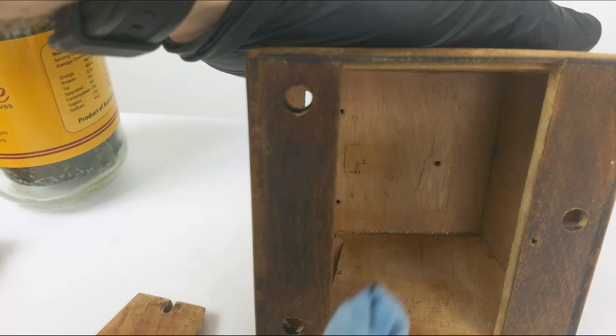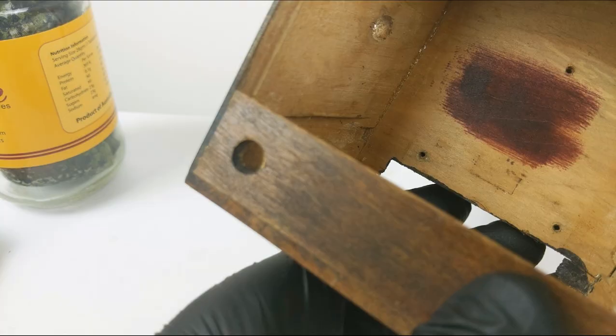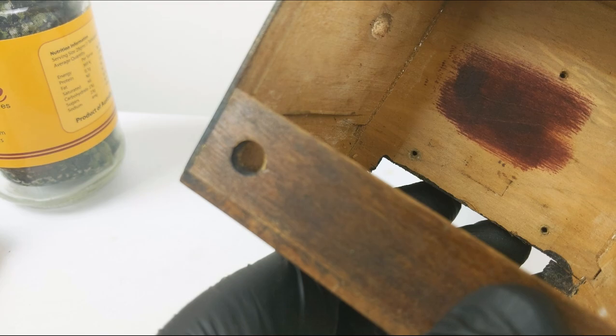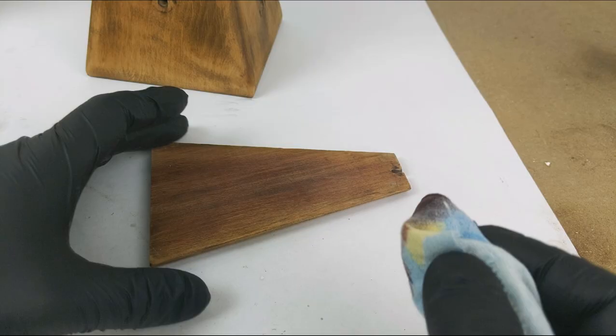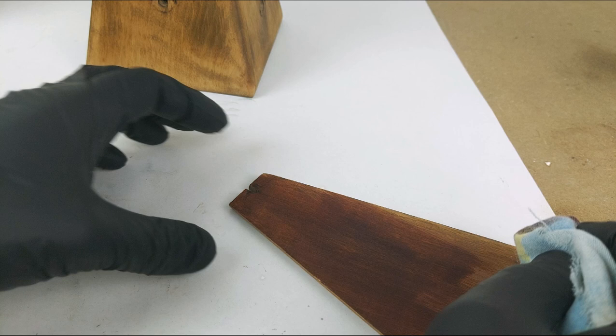With stain, it is always important to check it on a small area before going to town on the whole thing. In this case, I found the stain a bit too heavy, so I dilute it with some metho, allowing more control over the final color. I can layer it up until I am happy and am less likely to get splotches or darker areas in the final result.